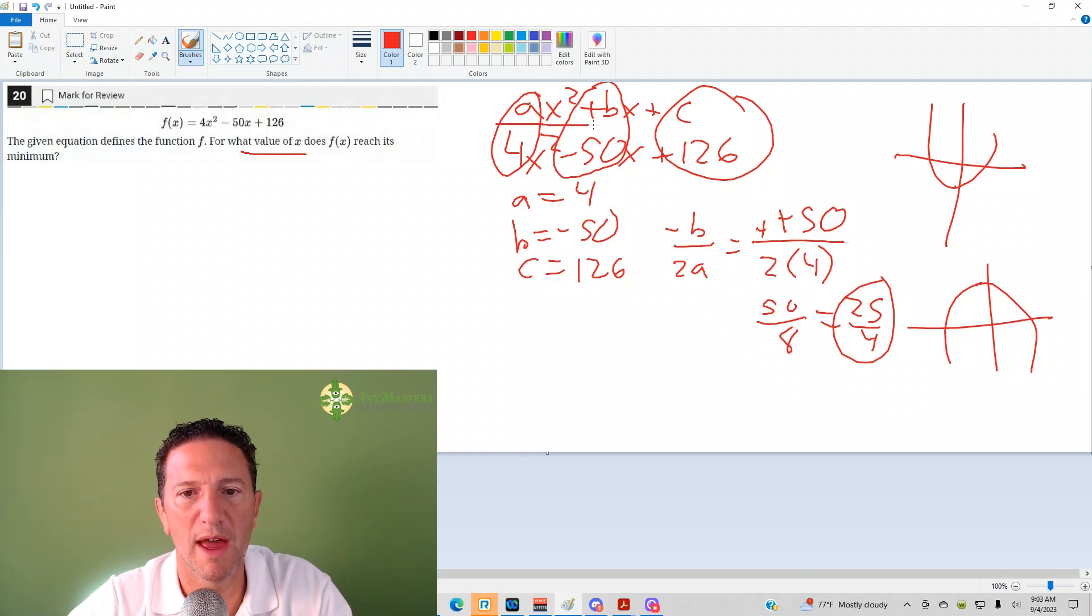When you're in the form ax squared plus bx plus c, negative b over 2a will give you the x part of the minimum. It's also called the axis of symmetry, or the x part of the maximum, or the x part of the vertex. All those three things are the same, so you can see how they correspond.